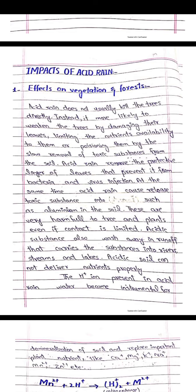Acid rain removes the protective layer of leaves that prevents bacterial and viral infection. Acid rain destroys the protective layer of plants that prevents infections from viruses and bacteria.